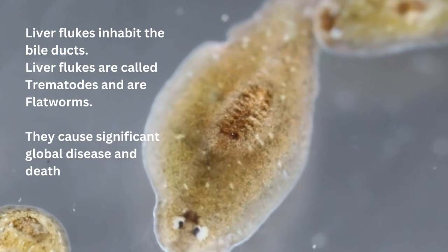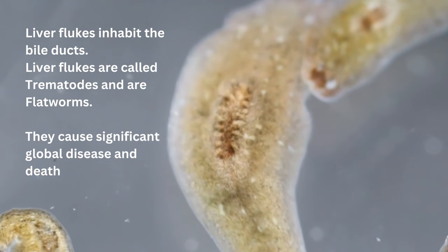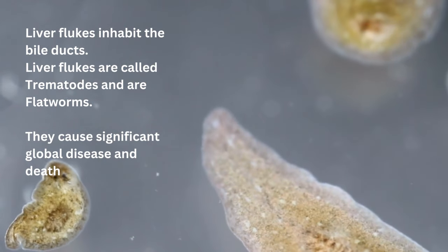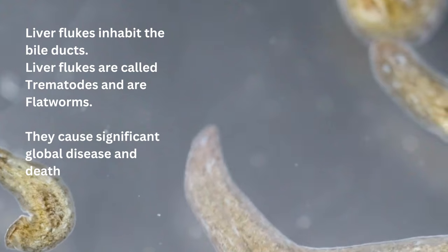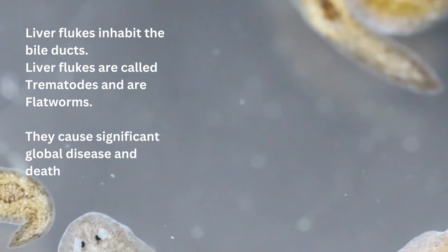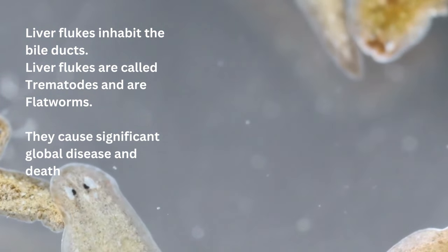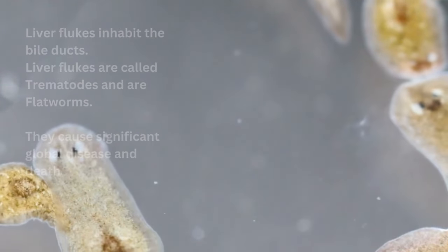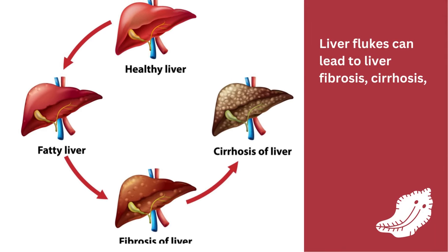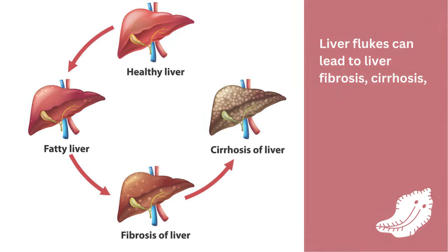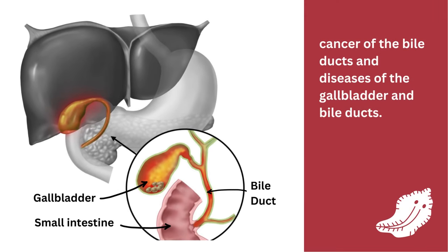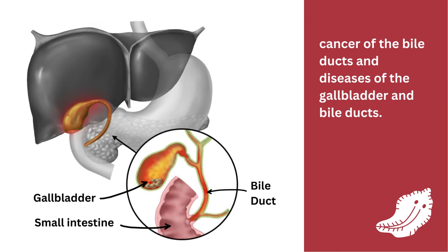Liver flukes inhabit the bile ducts. Liver flukes are called trematodes and are flatworms. They cause significant global disease and death as they can lead to liver fibrosis, cirrhosis, cancer of the bile ducts, and diseases of the gallbladder and bile ducts.